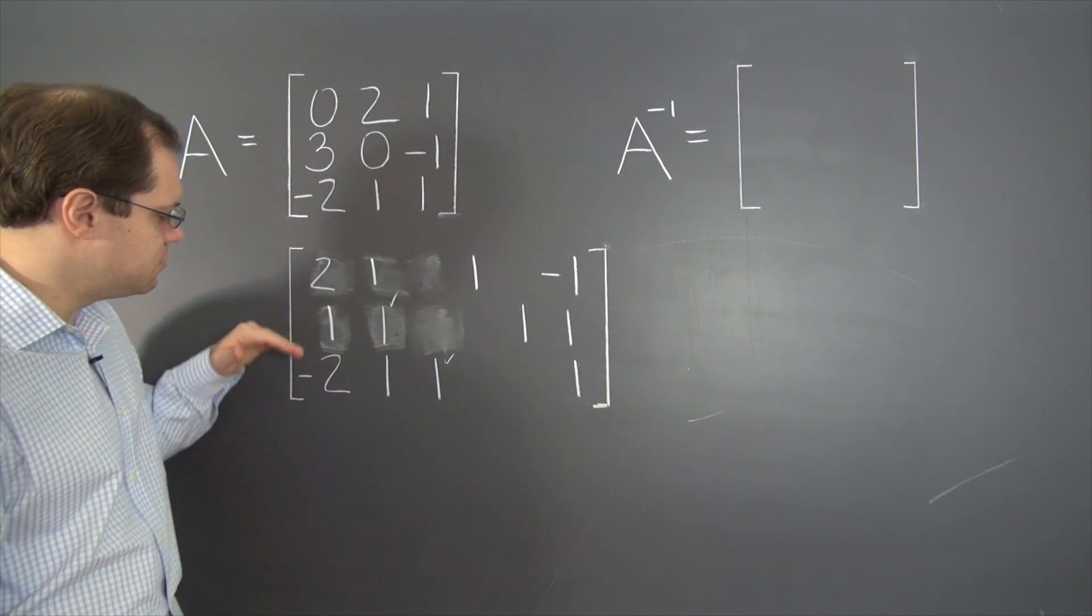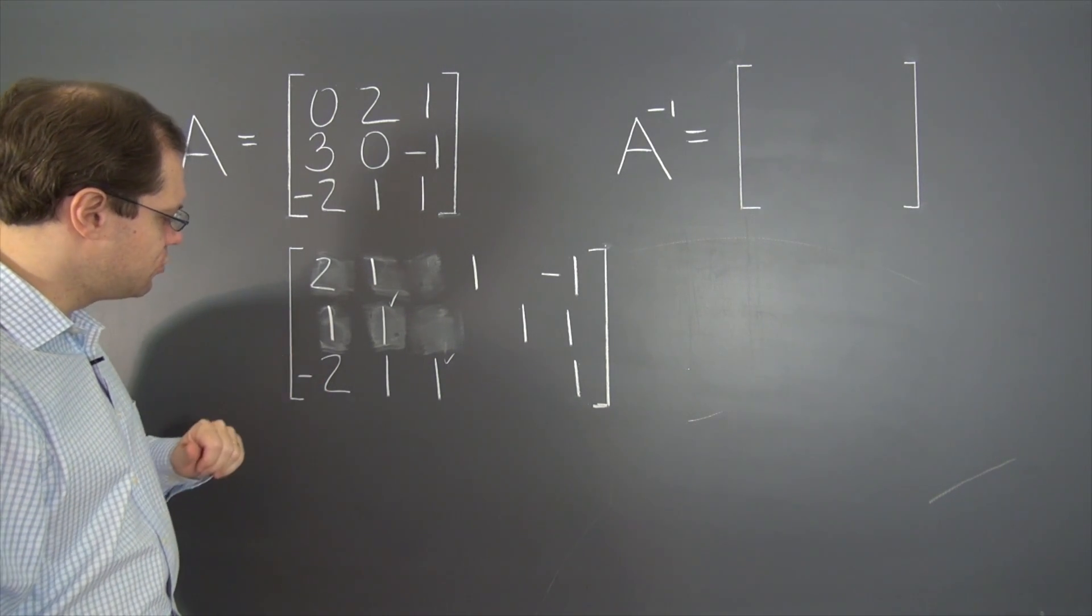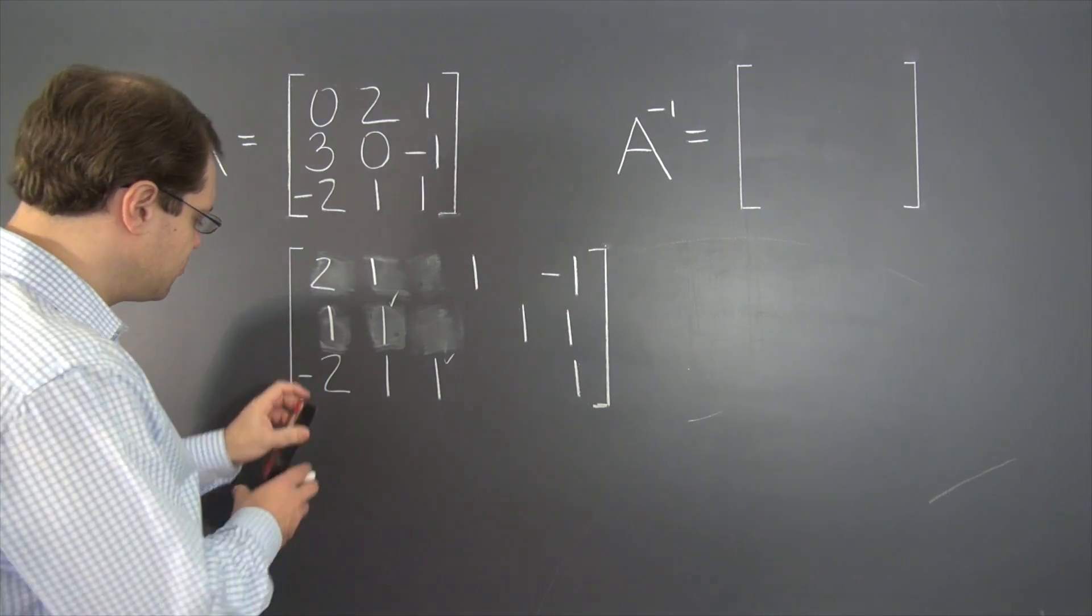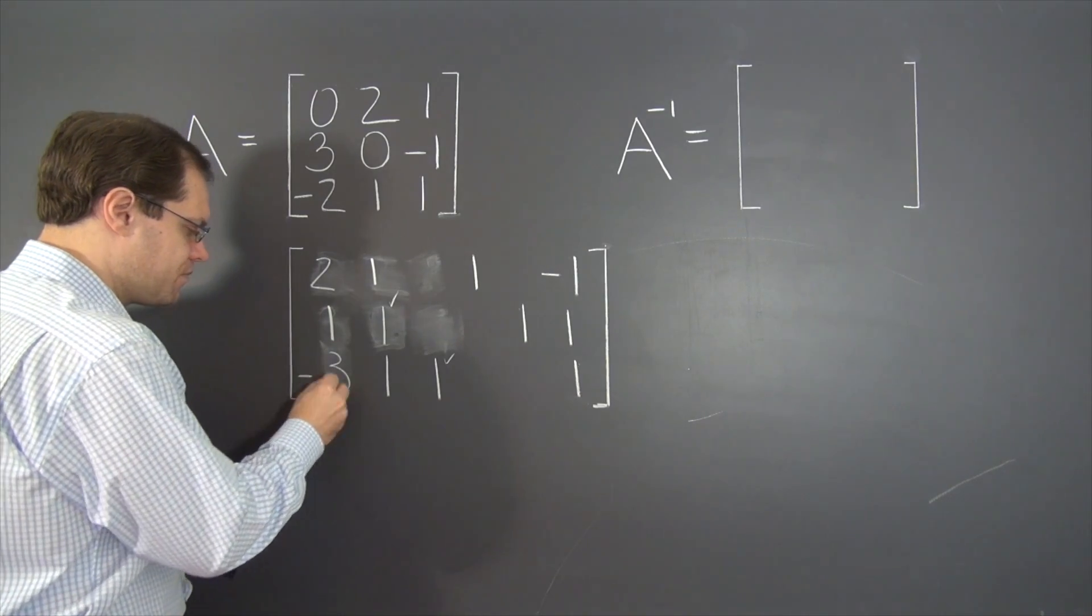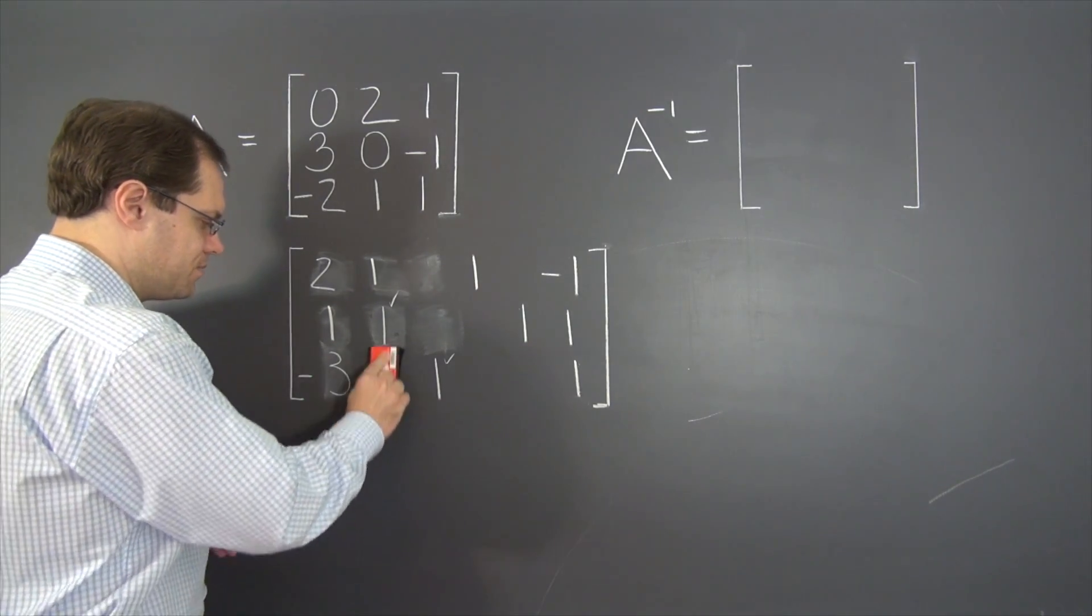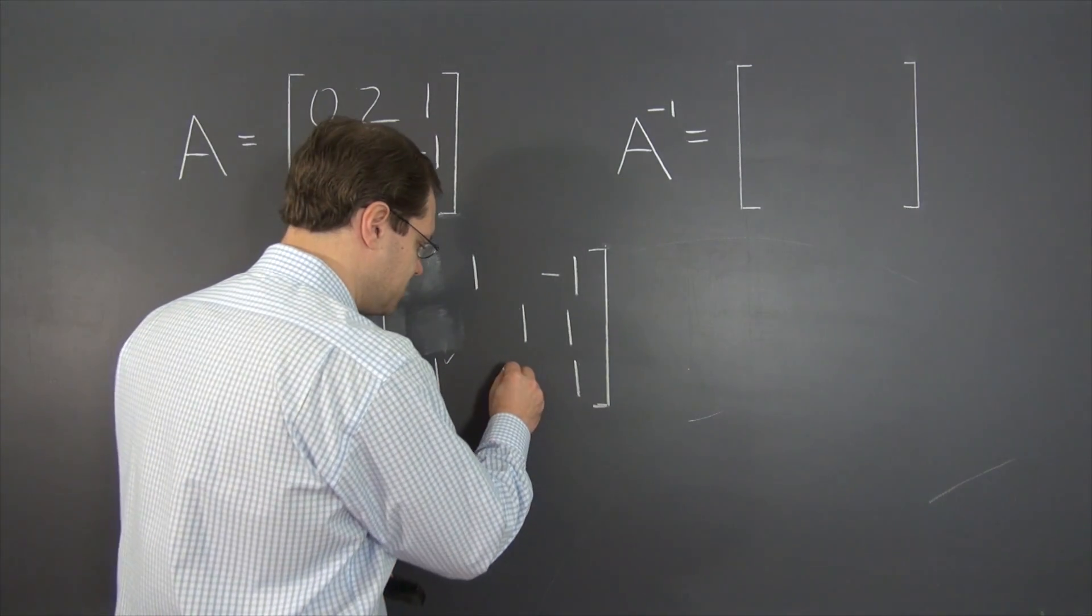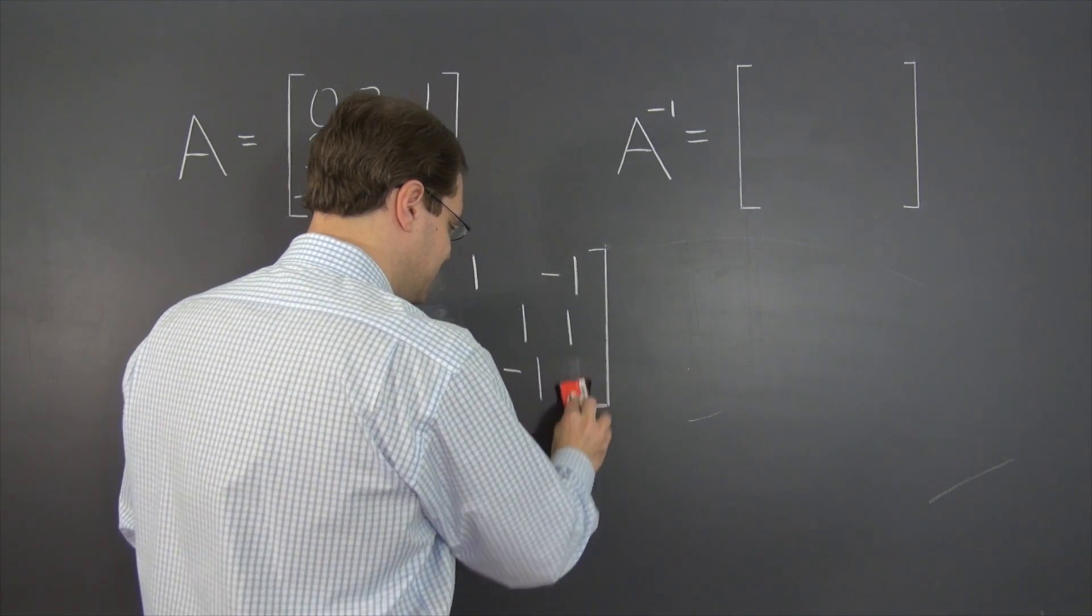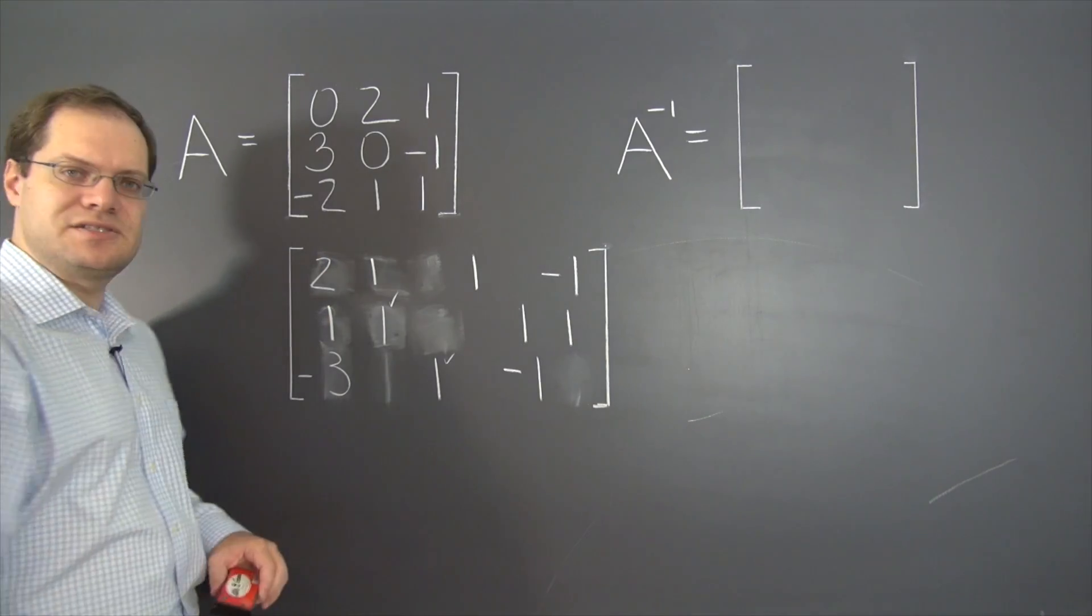So that operation would be to subtract row two from row three. Subtract row two from row three. So this negative two becomes a negative three, this becomes zero by design, now we're doing some subtractions, minus one and zero here. Now let's eliminate this one above it.